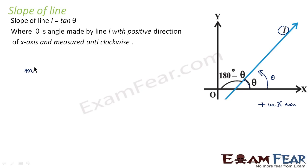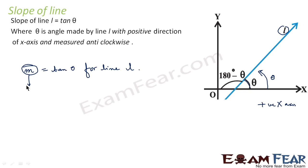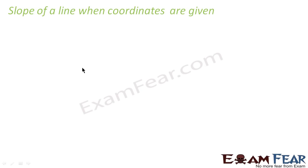Slope is denoted by m. So m = tan θ, where θ is the angle that the line makes with the positive direction of the x-axis, measured in the anti-clockwise direction.